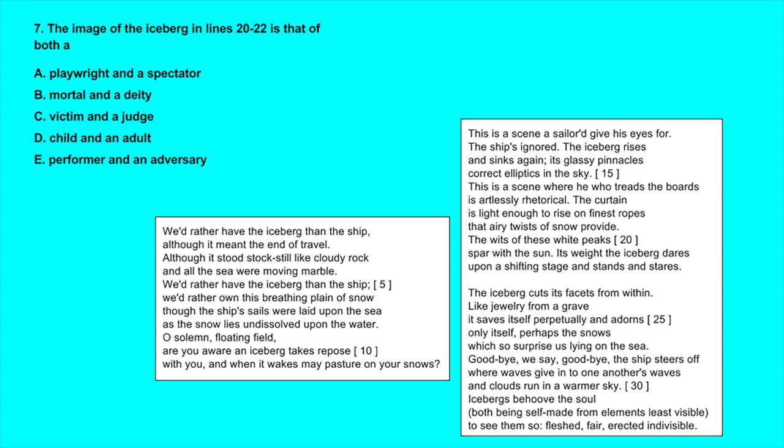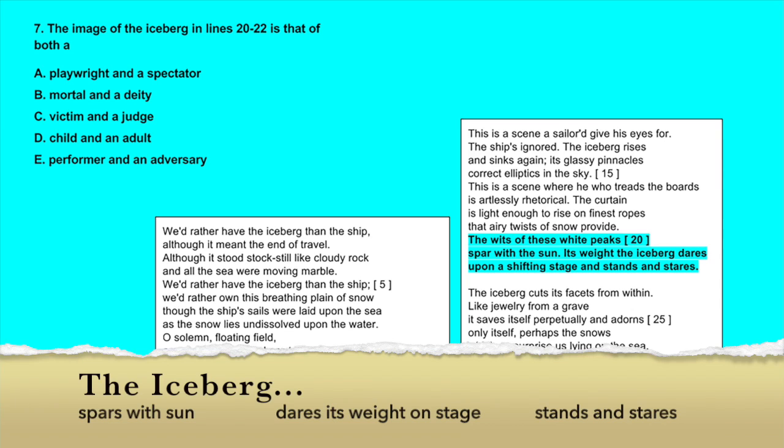Question number seven: The image of the iceberg in lines 20 through 22 is that of a what and a what? Let's take a look at the lines in question. The wits of these white peaks spar with the sun, its weight the iceberg dares upon a shifting stage and stands and stares.